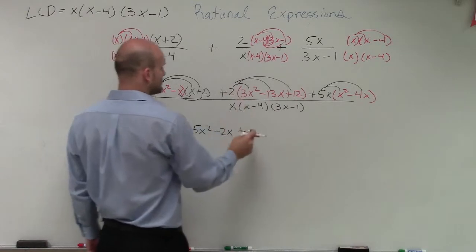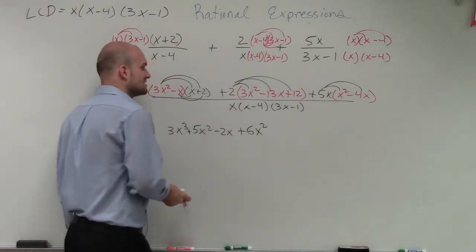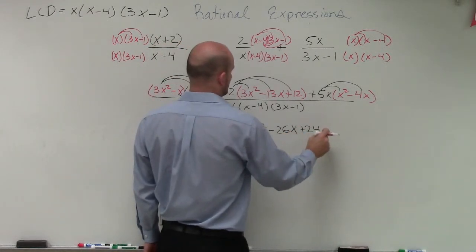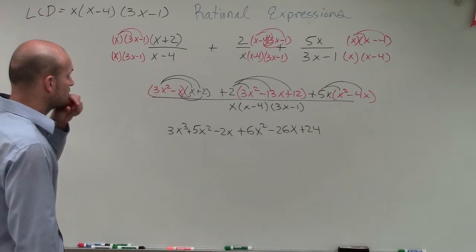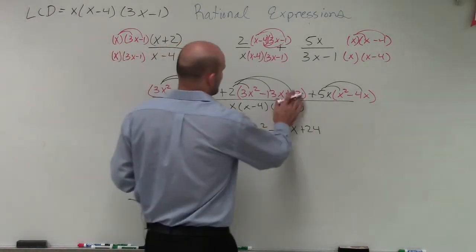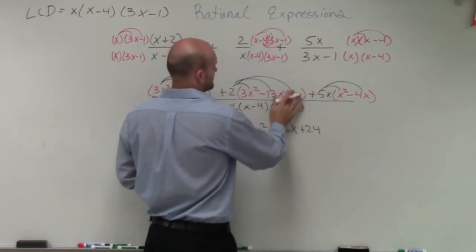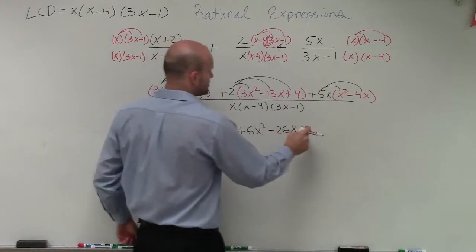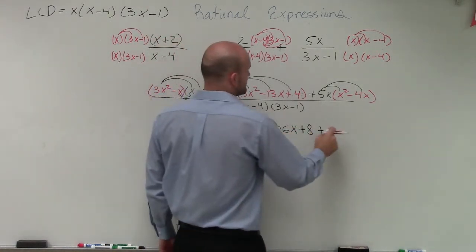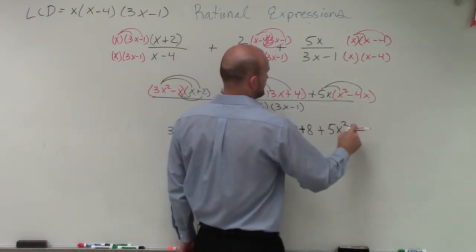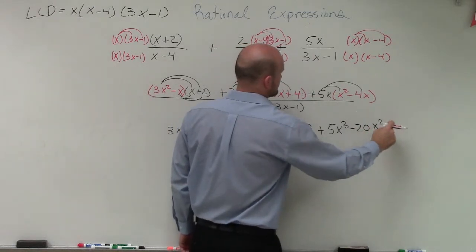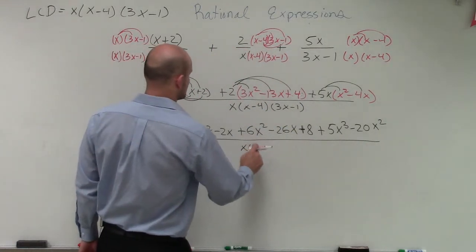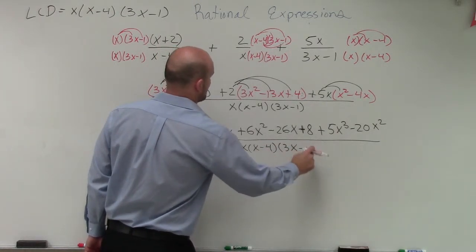Continuing: 2 times 3x² is 6x²; 2 times negative 13 is negative 26x; and 2 times 12 is positive 24. Then 5x times x² is 5x³, and 5x times negative 4 is negative 20x². All of this is over our LCD, which is x times (x minus 4) times (3x minus 1).